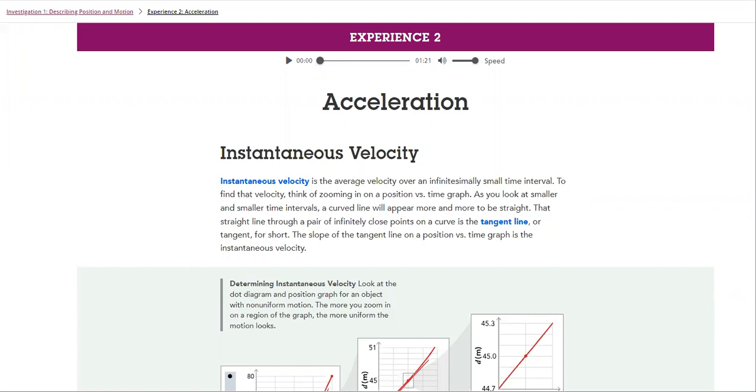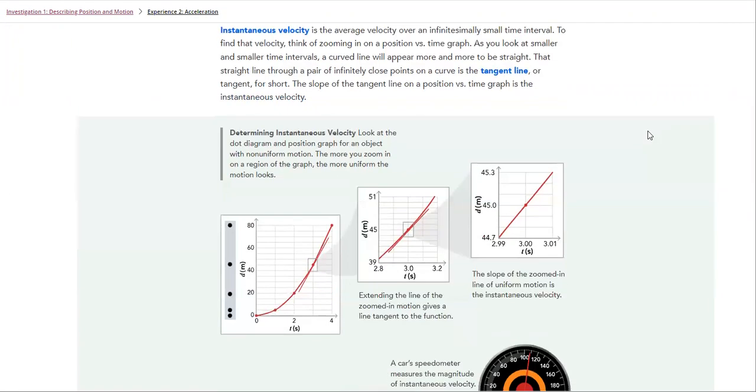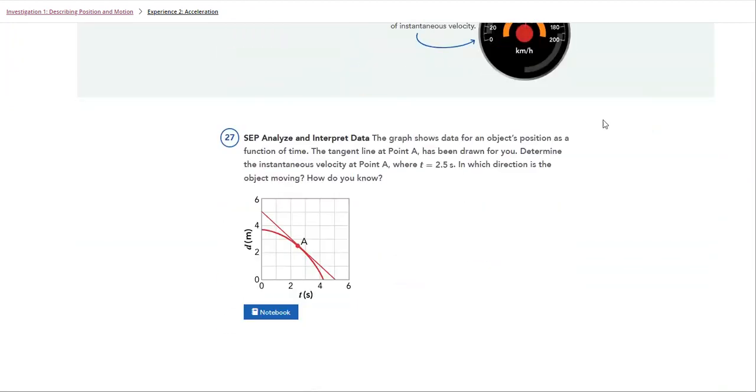What's the difference between instantaneous velocity and average velocity? We always talk about graphs. We'll talk about graphs of changing velocity.